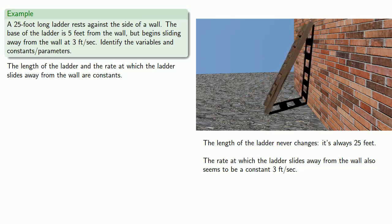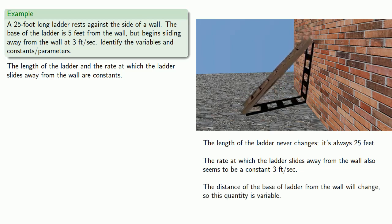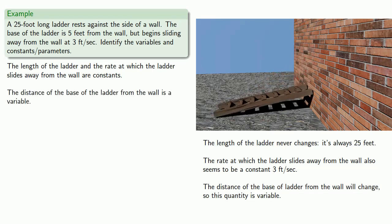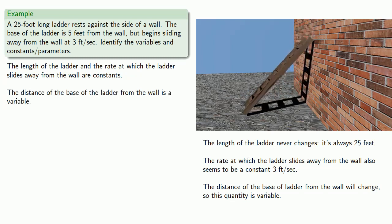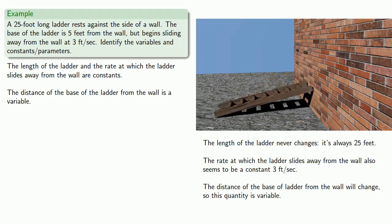Finally, we notice that the distance of the base of the ladder from the wall will change. So this quantity is a variable quantity. And in fact, we also see that the height of the ladder changes. So that too is variable.